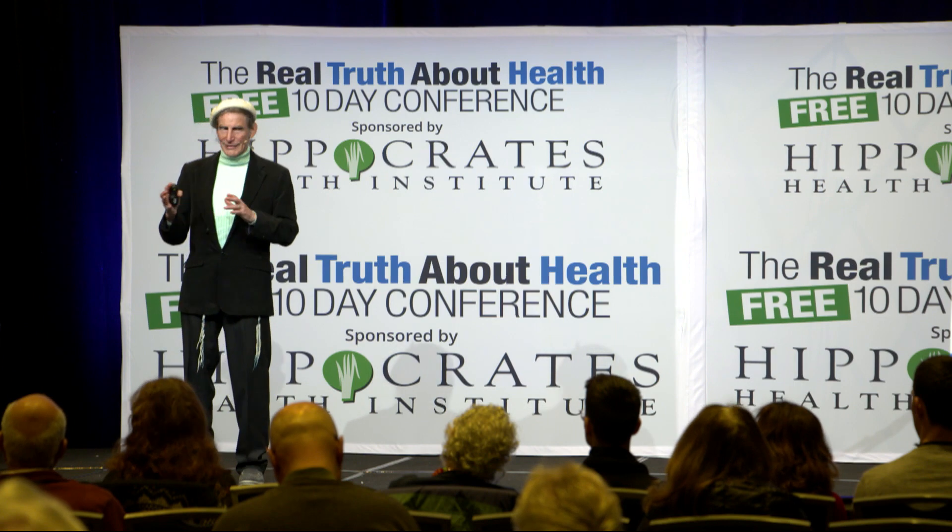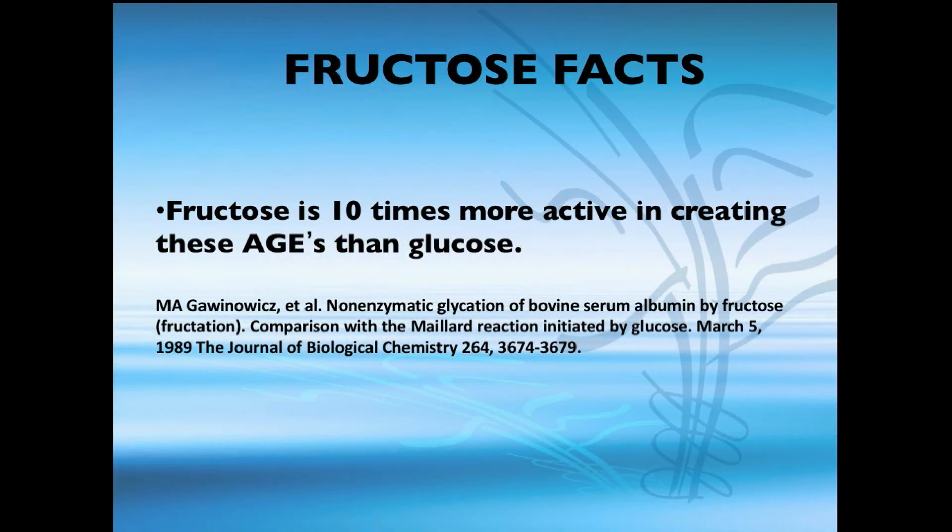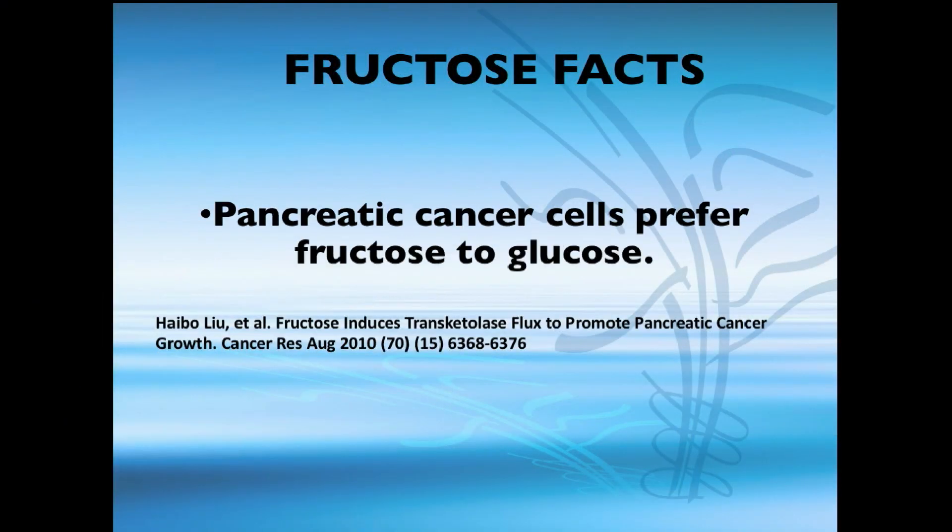We can also get these glycotoxic problems from animal flesh, because animal proteins are already glycosylated. When we eat them, they create free radicals, oxidization, and disrupt our metabolism. But fructose is actually very powerful — approximately ten times more powerful than glucose in this regard.